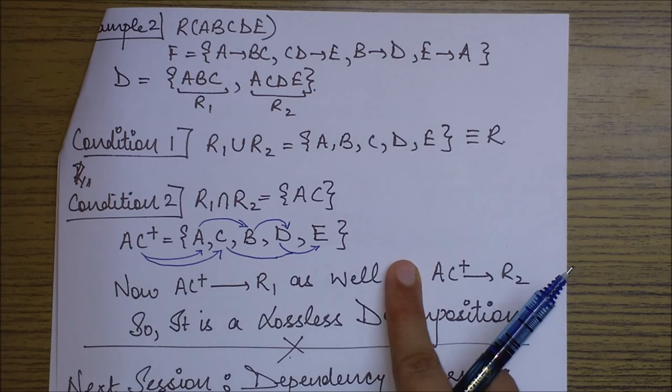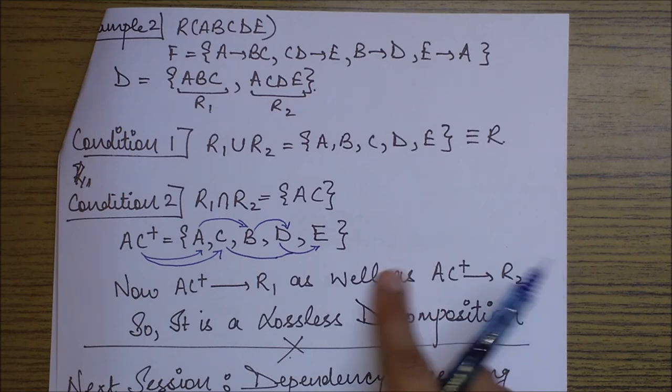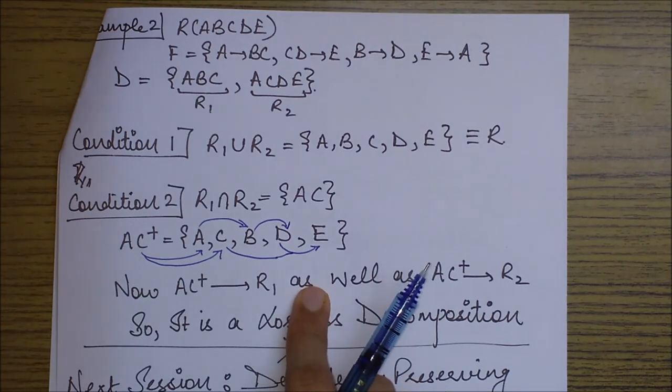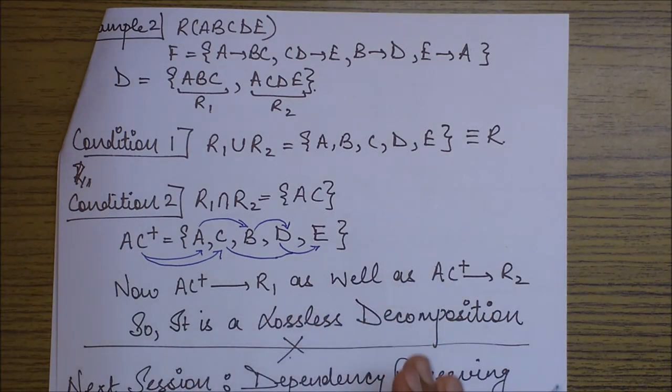Now since it has all the attributes, it will definitely be able to determine R1 and R2 both. We just needed it to determine either of the relations. But it determines both. So it is essentially a lossless decomposition.